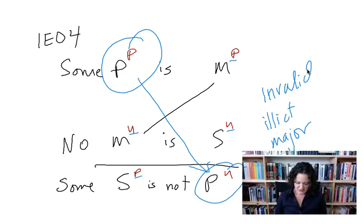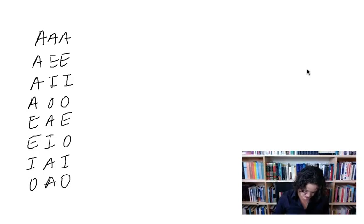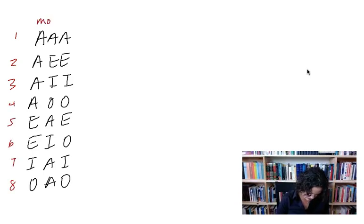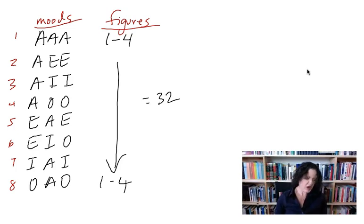So the moods you do need to test are: AAA, AAE, AEE, AIO, AOO, EAE, EIO, IAI, and OAO — eight moods in total. Your homework is to put each of these into figures 1 through 4, giving you 32 problems to work through. I'll do one of them for you now.